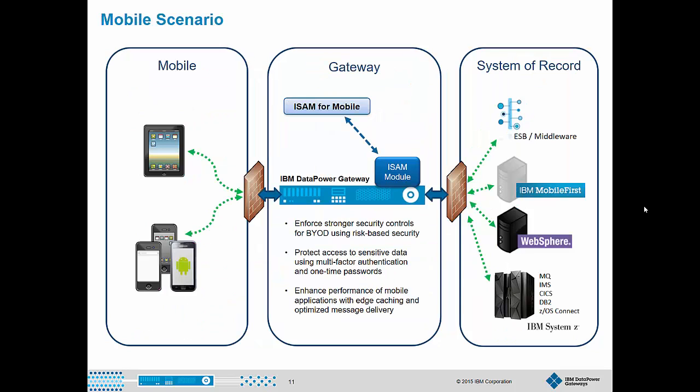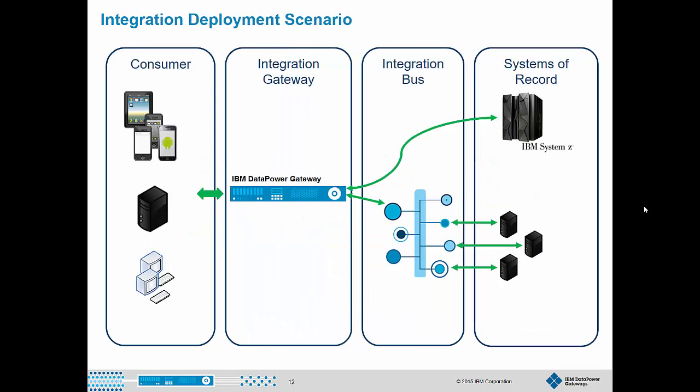DataPower is equally adept at securing and controlling mobile channels. When combined with the IBM Security Access Manager module, the IBM DataPower Gateway provides enhanced user access security such as multi-factor authentication and one-time passwords for web and mobile applications. DataPower acts as a highly scalable reverse proxy for user access control and web single sign-on, along with enforcement of context-based access policies. As an integration gateway, DataPower can perform many protocol and transformation functions at the network edge that might normally be done by an ESB. We've seen many customers deploy DataPower in front of IBM Integration Bus or other ESBs to offload processor-intensive cryptography and transformation actions.